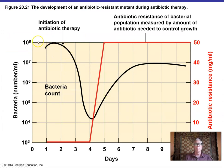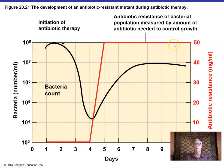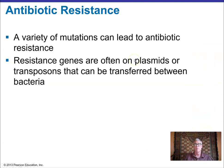A graph showing bacterial growth after antibiotic treatment: the number of bacteria declines, showing the antibiotic is effective, but then the bacterial count starts to rise again — antibiotic resistance has occurred. The dose needed to control the bacteria keeps going up until there is no effective concentration and they're fully resistant.